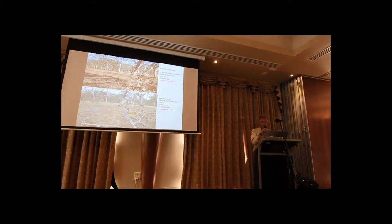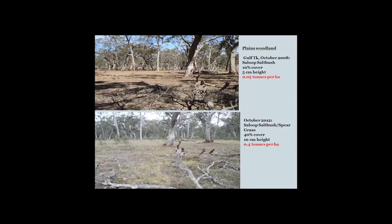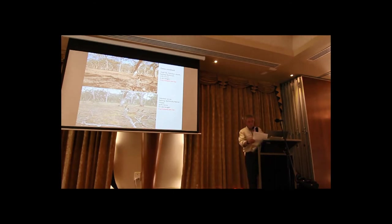Right at the top of the spectrum, we've got the Plains Woodland Landscape Unit — basically the box ridges within the forest. The response of this landscape unit has predominantly been due to rainfall, and the good rainfall we've had over the last few years. During the drought, we only had 0.05 tonnes per hectare, and now it's still a low biomass at 0.4 tonnes per hectare, but it has significantly increased since the breaking of the drought.